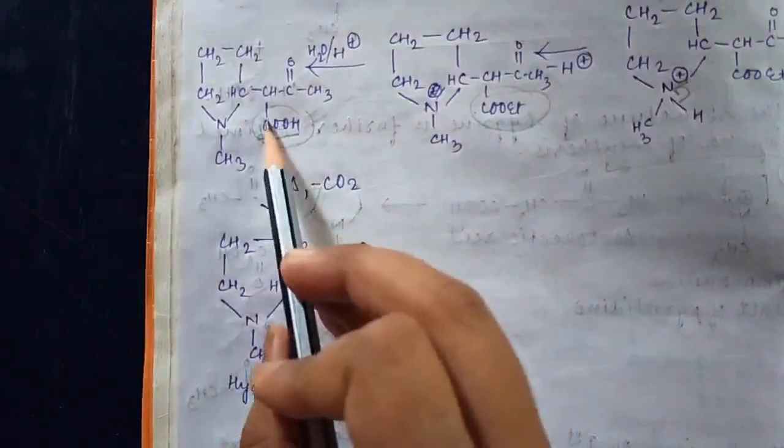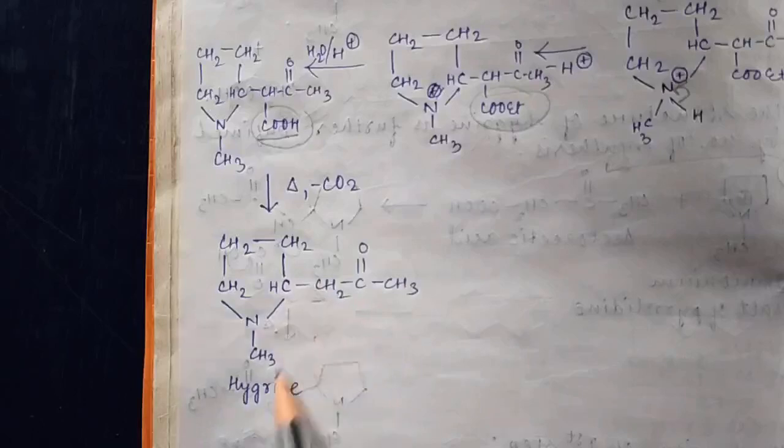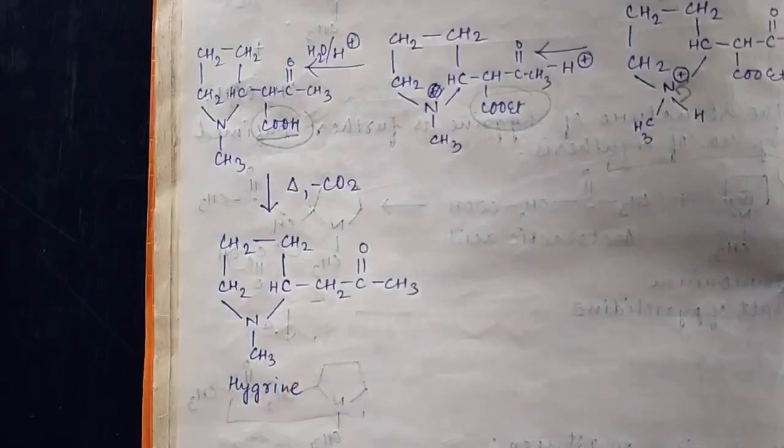After decarboxylation takes place, the COO part is removed as CO2, and the CH2 part remains. The structure we get is the structure of hygrine. This is the second synthesis, so by the synthesis of hygrine, the structure is confirmed.